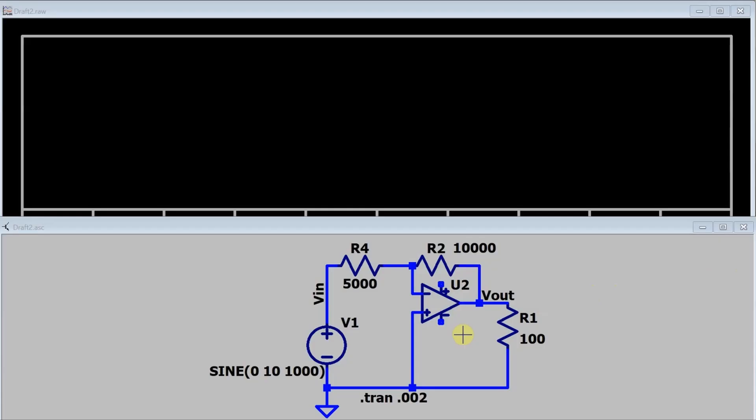So I've got the inverting amplifier built here in LTSpice. I have my feedback resistor of 10,000 ohms and my input resistor of 5,000 ohms. I've got a sine wave source with a 10 volt peak at a thousand hertz. I'm only going to run it for two milliseconds here.